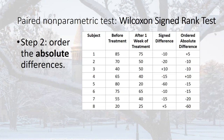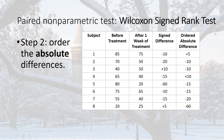Step two: order the absolute differences. If you just ordered from negative to positive, you'd miss information. When you order by absolute value, you get plus 5 first, then the 10s — plus or minus — in any order, then the 15s, the minus 20, and the minus 60. Ignore the sign in this step and sort purely by magnitude.